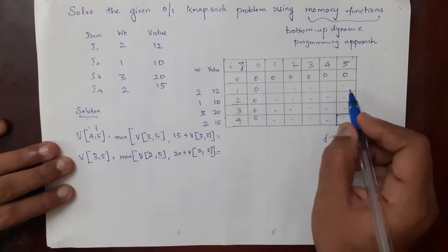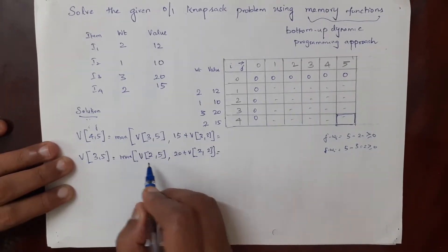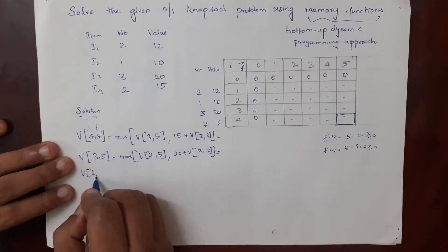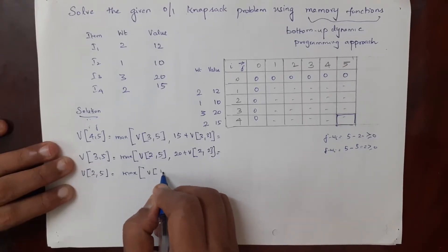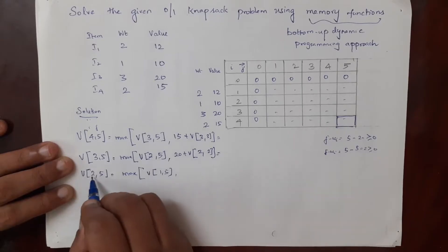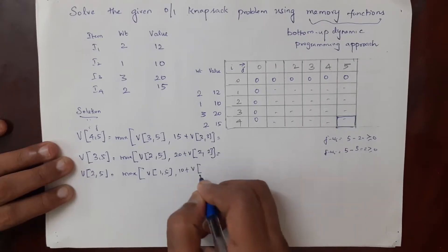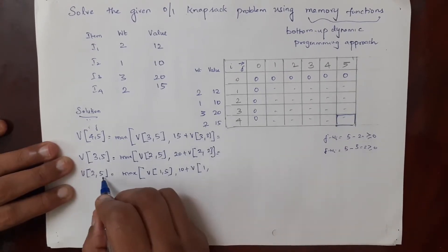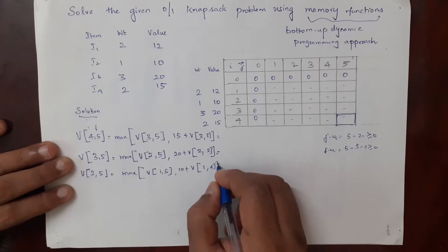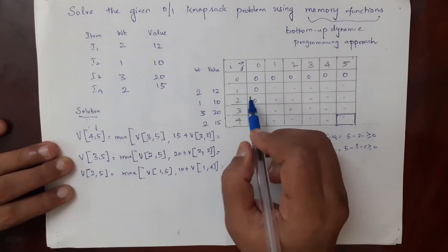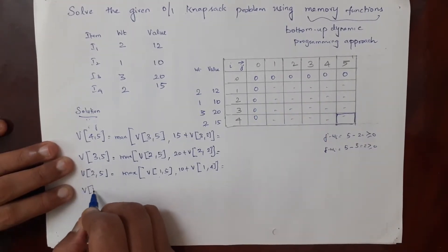Cells 2 comma 5 and 2 comma 2 are also null. So in order to find v(3,5) we need to find v(2,5) and v(2,2). For v of 2 comma 5: maximum of v(1,5), or value of the second item (10) plus v of 1 comma (j minus wi) = v(1, 5 minus 1) = v(1,4). We need to find v(1,5) and v(1,4) since both are unknown.